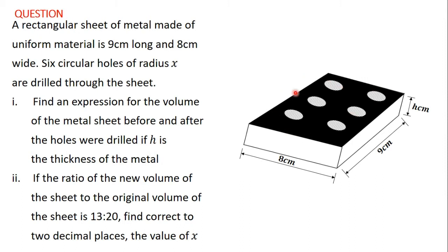You have been given this metal sheet in the shape of a cuboid, with dimensions 8 centimeters by 9 centimeters by h centimeters. Six circular holes of radius x are drilled through the sheet. The first part asks for expressions for the volume before and after the holes were drilled, and the second part asks us to find x given the ratio of volumes is 13 to 20.